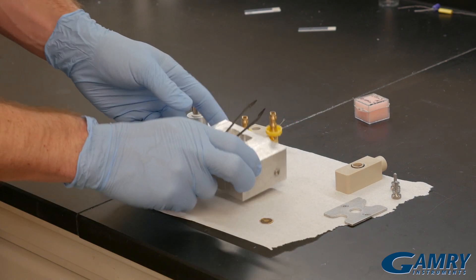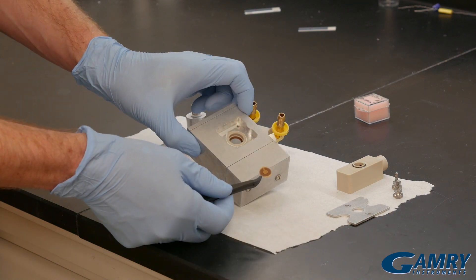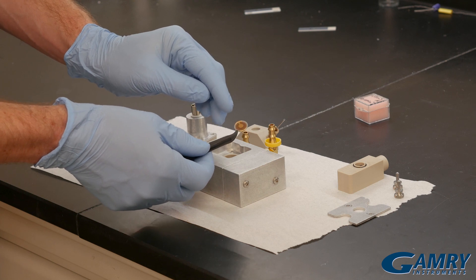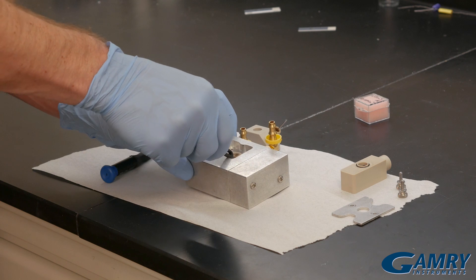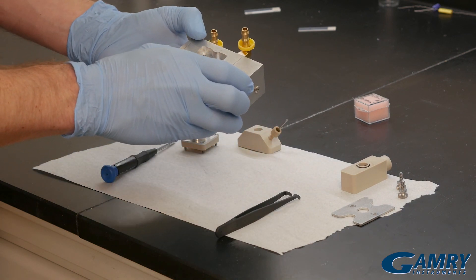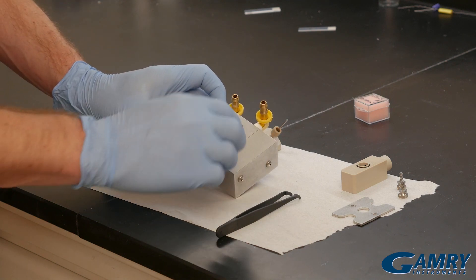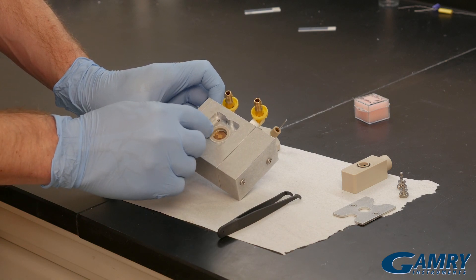We first start with picking up our quartz crystal and placing it in the back of our cell, making sure to place the keyhole configuration in the nine o'clock position. So I drop the crystal in there, making sure that the keyhole configuration is in the nine o'clock position.